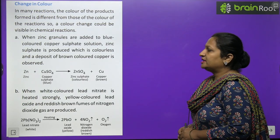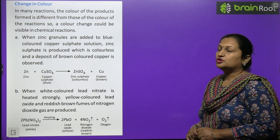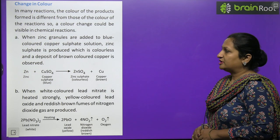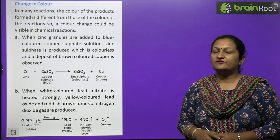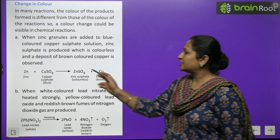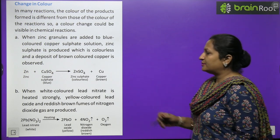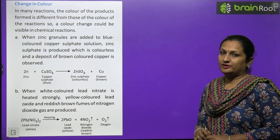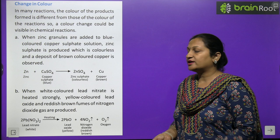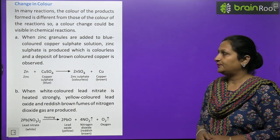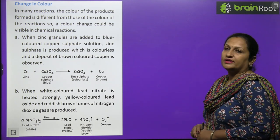Second characteristic: change in color. In many reactions the color of the product differs from the reactants. For example, add zinc granules to copper sulfate solution (blue, also called blue vitriol) - zinc sulfate is produced (colorless) and copper is displaced, depositing as a brownish-black substance. Also, when white-colored lead nitrate is heated, it forms yellow lead oxide, and brown nitrogen dioxide gas is released along with oxygen gas.